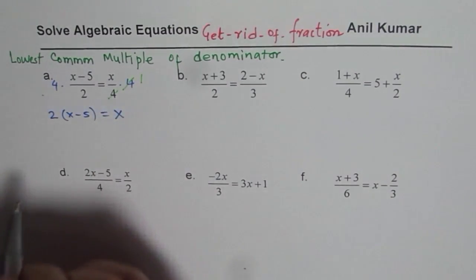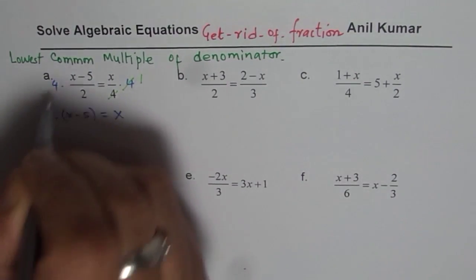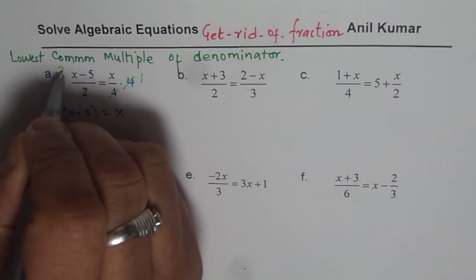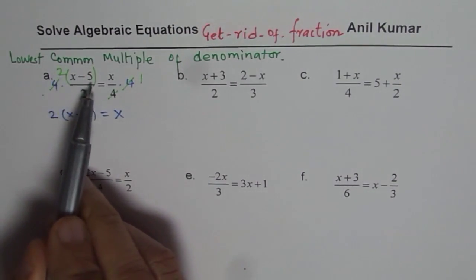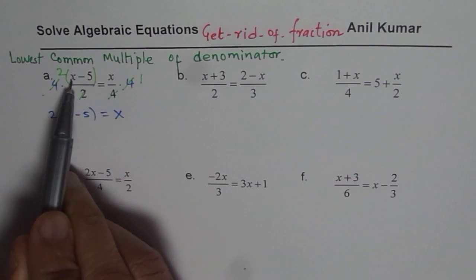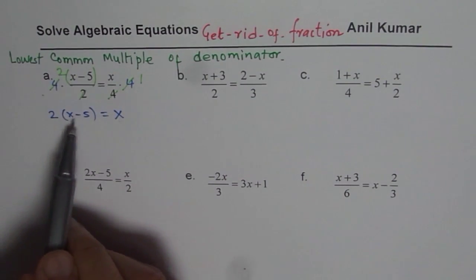So 4 divided by 4 is 1. 1 times x is x. 4 divided by 2 is 2 right. So we have to multiply both by 2. So don't make a mistake of multiplying only the first term right. Multiply both as I have written here.